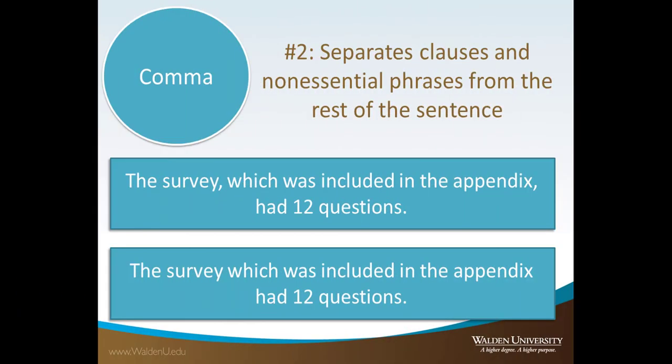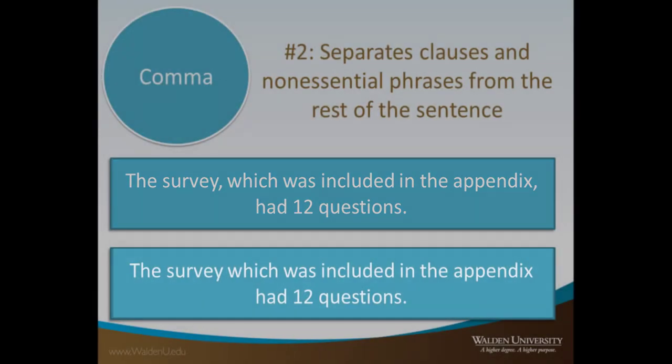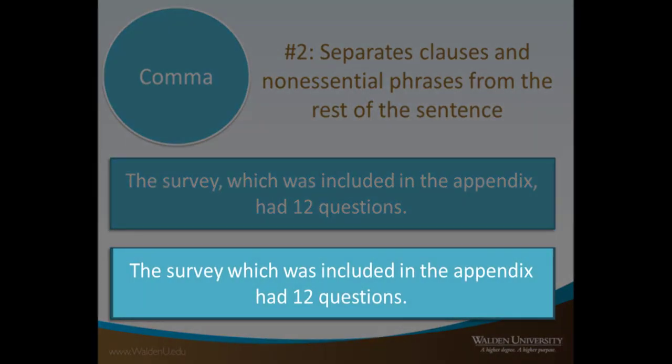The second common way we use commas is to separate clauses and phrases from the rest of the sentence, usually extra information that is not essential to the basic meaning of the sentence. This example is correct because the extra information is surrounded by commas. This example is incorrect because the extra non-essential information is not surrounded by commas.